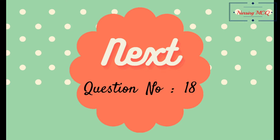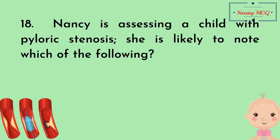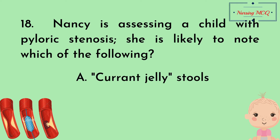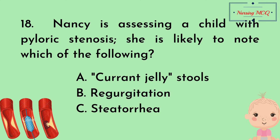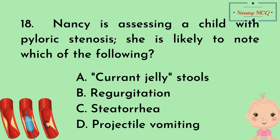Question number 18. Nancy is assessing a child with pyloric stenosis. She is likely to note which of the following? Option A, currant jelly stools; Option B, regurgitation; Option C, steatorrhea; Option D, projectile vomiting. The right answer is Option D: projectile vomiting.